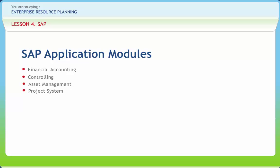Project System (PS) is designed to support the planning, control and monitoring of long-term, highly complex projects with defined goals. Workflow (WF) links the integrated SAP application modules with cross-application technologies, tools and services. Industry Solutions combines the SAP application modules with additional industry-specific functionality. Human Resources is a complete integrated system for supporting the planning and control of personnel activities.